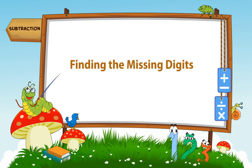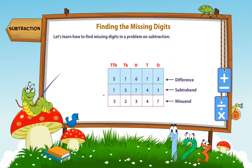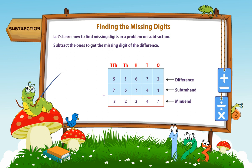Finding the missing digits. Let's learn how to find missing digits in a problem on subtraction. Subtract the ones to get the missing digit of the difference. 2 minus 1 is equal to 1.